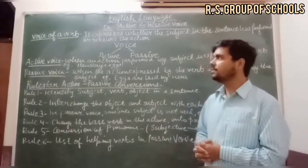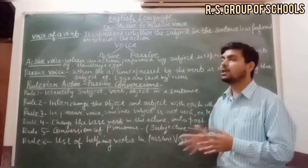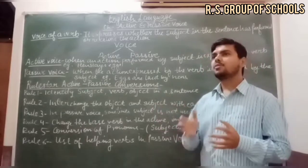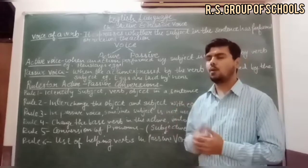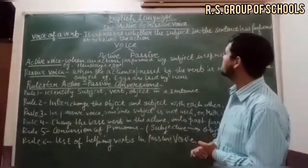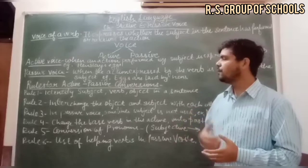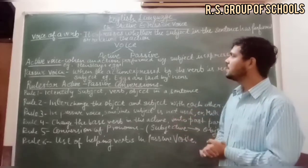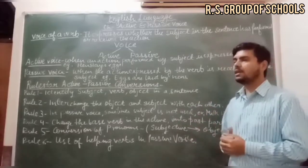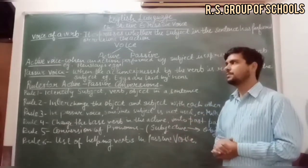In an active voice sentence, a subject is performing the action. Active voice means that when an action performed by the subject is expressed — the action performed by a subject — here in active voice sentence, subject is the doer of the action.